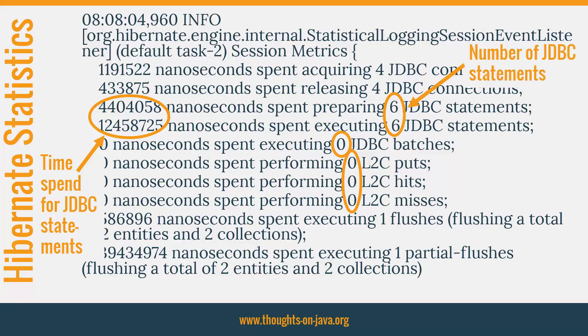You can see the number of performed statements here. You should always check if Hibernate performed more queries than you expected. Even 10 or 20 unexpected statements can be caused by an N+1 select issue, which results in several hundreds or even thousands of queries on the production database.